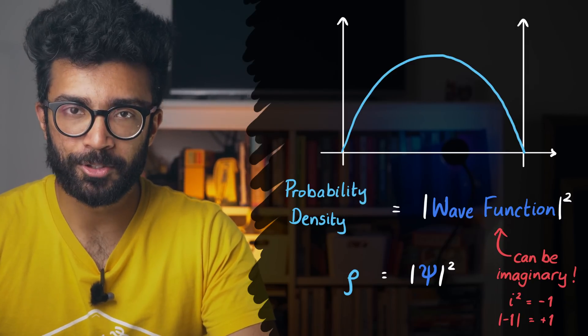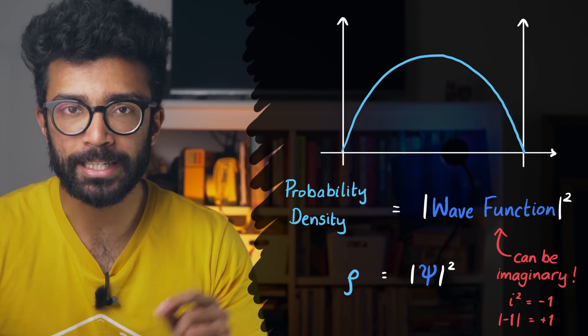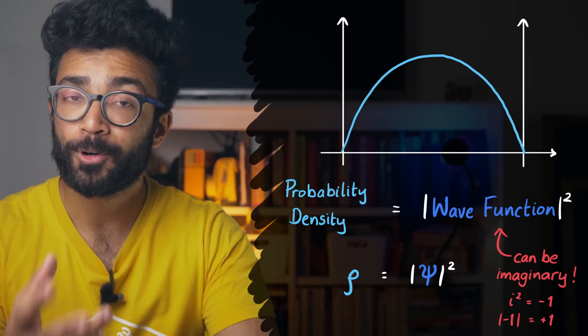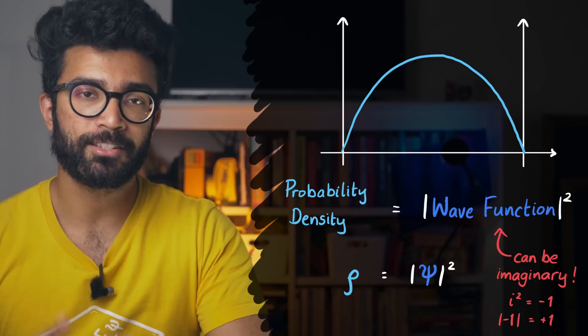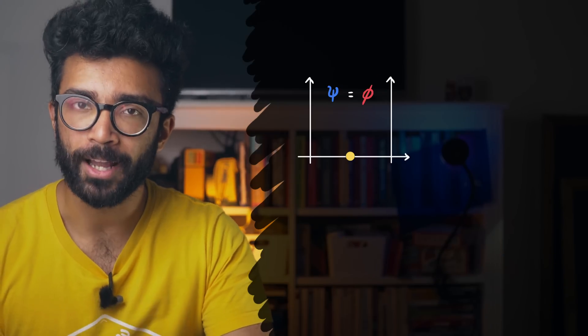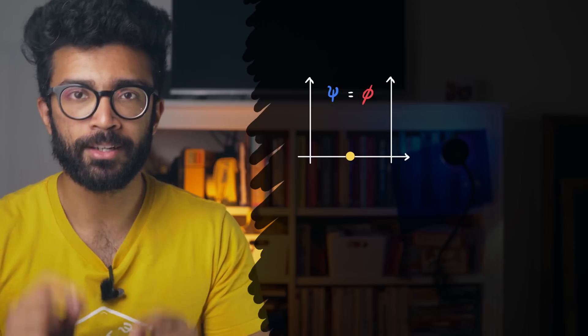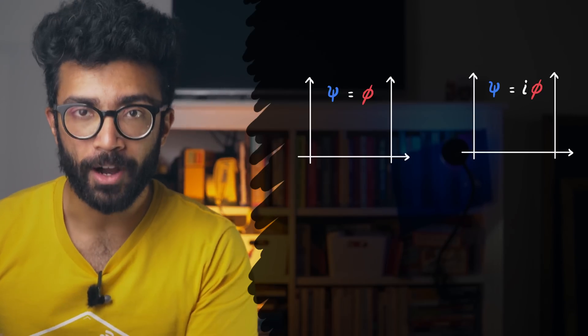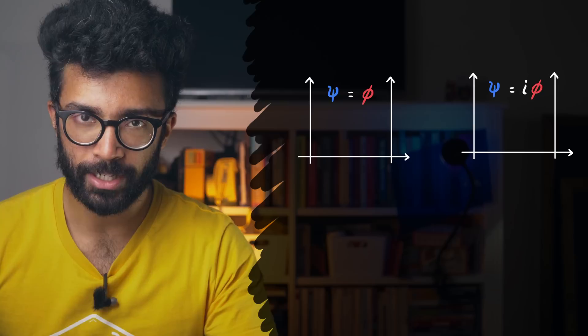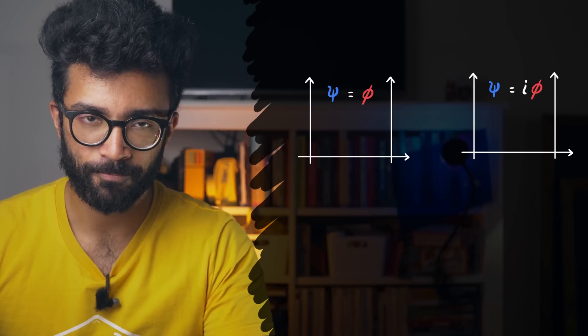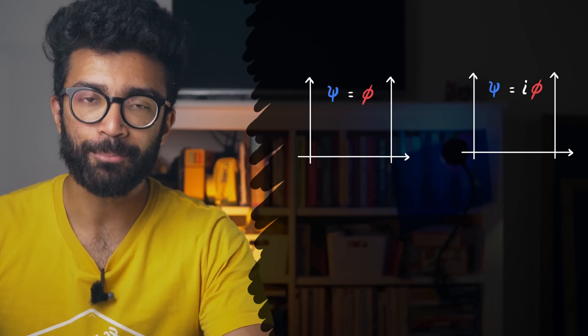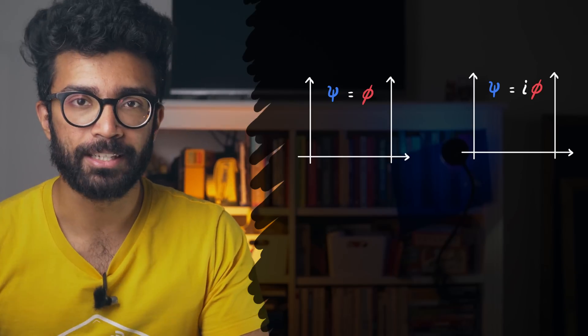Well, the probability distribution isn't enough to uniquely define our system. For example, imagine we have a system here with the wave function phi. Whatever phi is, it doesn't really matter to us right now. And we have another system with the wave function i phi, where i is the imaginary number, the square root of negative one. Remember, we said wave functions can be imaginary, so this is a valid wave function.